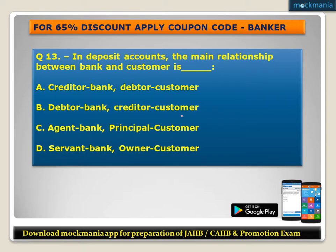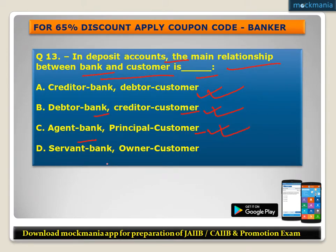Question number thirteen: In deposit accounts, the main relationship between bank and customer is? Options: A) creditor bank, debtor customer, B) debtor bank, creditor customer, C) agent bank, principal customer, D) servant bank, owner customer. The correct answer is B - debtor bank, creditor customer. In deposit accounts, the bank is the debtor and the customer is the creditor.